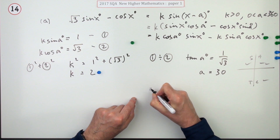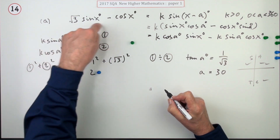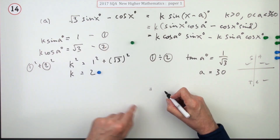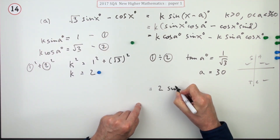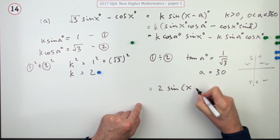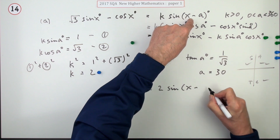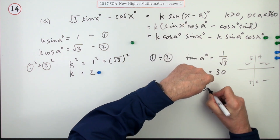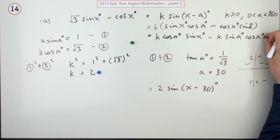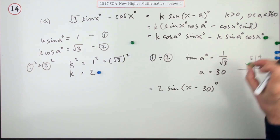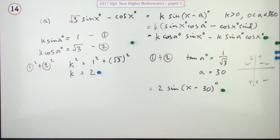That's not yet the final mark. The final mark is for tidying up and stating the answer: the expression equals 2 sin(x − 30°). That's the fourth mark.